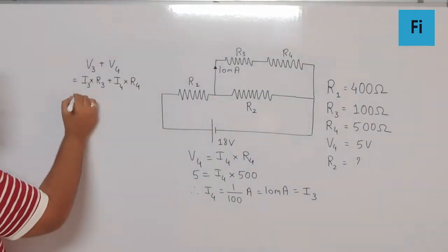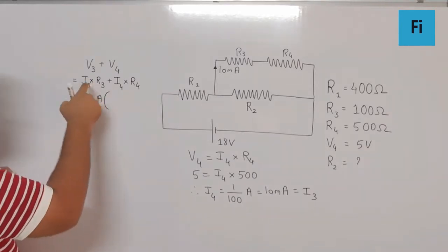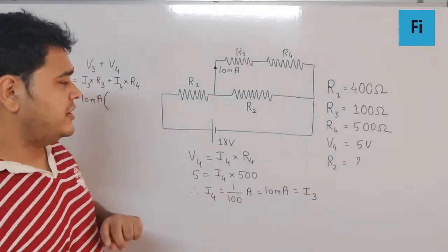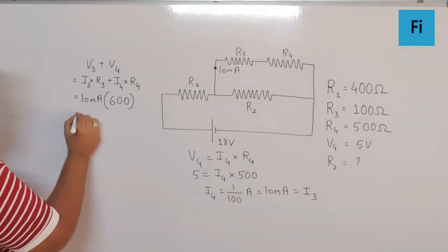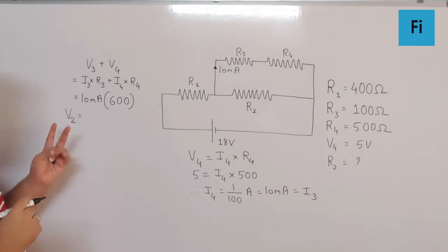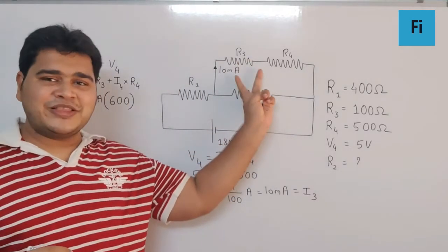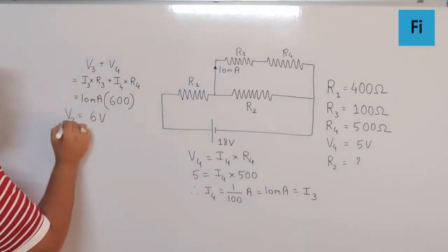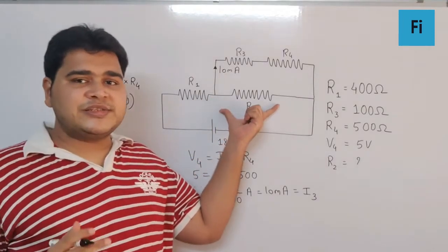So if I place that, this is going to be 10 milliampere common. R3 is given as 100 and R4 is 500. So 100 plus 500 is 600. That makes the value of V2, the potential difference across R2 or the combination of R3 and R4, since they are in parallel. We can say that is going to be 6 volt.